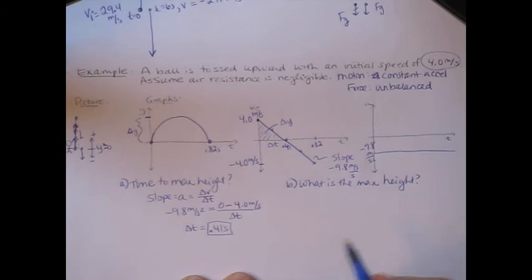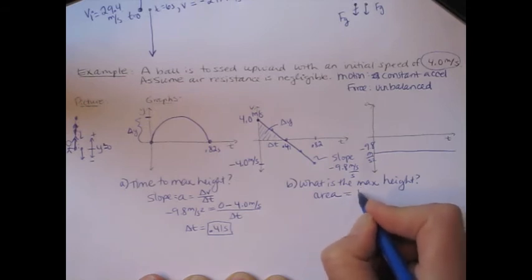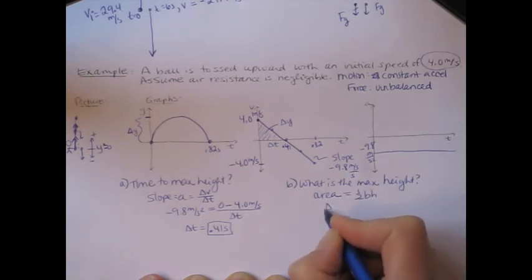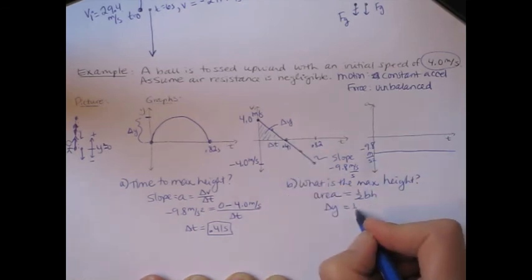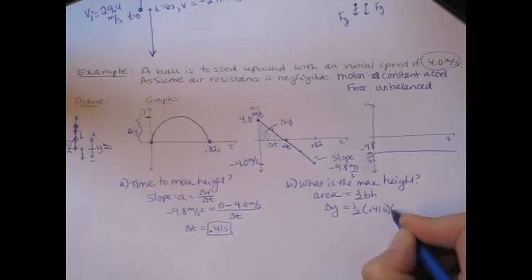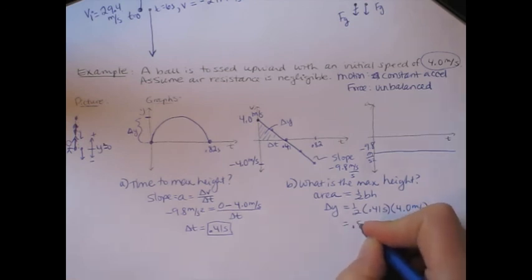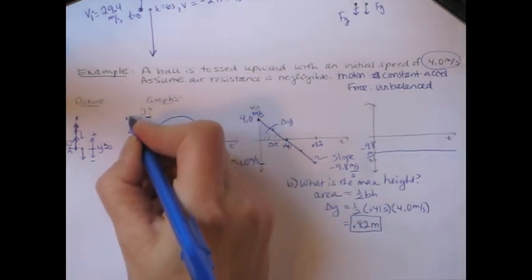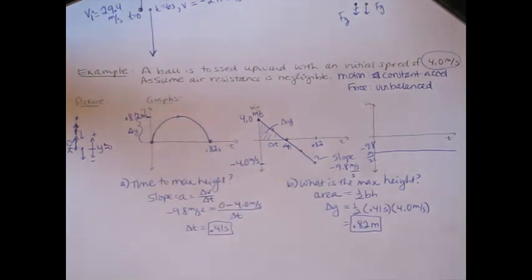What is the maximum height? Let's try the area. Area equals one half base times height. The area gives the displacement during that time interval. The base is delta t, which we just found: 0.41 seconds. The height is the velocity: 4.0 meters per second. Calculating that gives 0.82 meters. So on this graph, the displacement in the first half — the maximum height — is 0.82 meters.